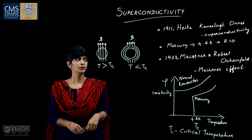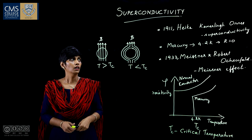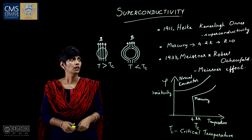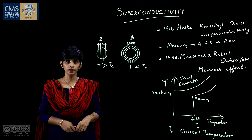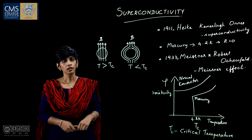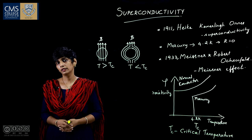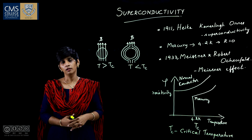Since the discovery of superconductivity in 1911, scientists have attempted to explain why superconductors behave the way they do. In 1957, three researchers — John Bardeen, Leon Cooper, and Schrieffer — tried to give a theory of how superconductivity works, and they received the Nobel Prize for this.